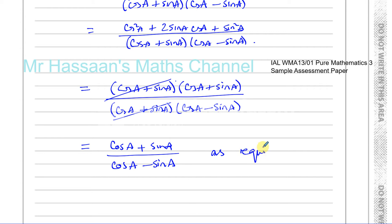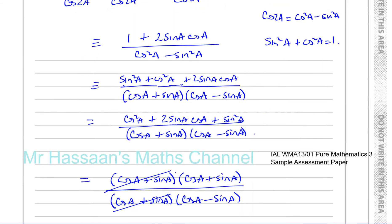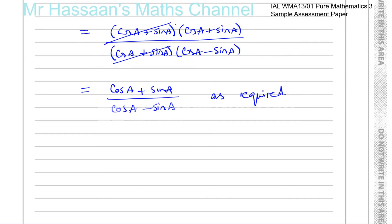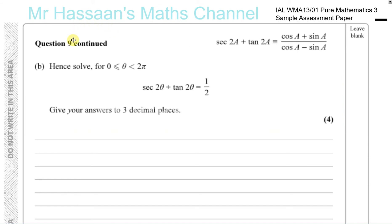And there we have the answer to part A. Now part B is saying: hence solve for theta between 0 and 2π the equation sec2θ plus tan2θ equals one half, giving answers to three decimal places. Since the range is given in terms of π, our answers will be in radians.